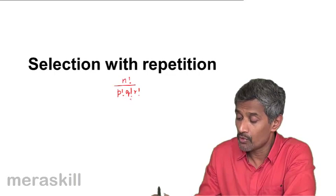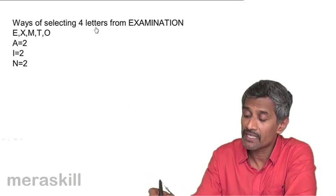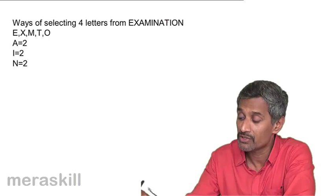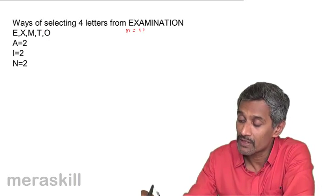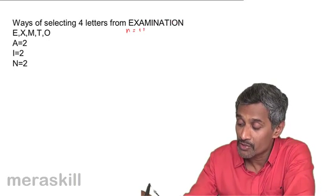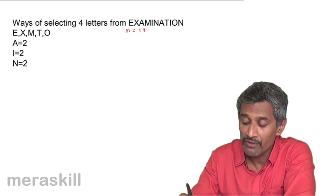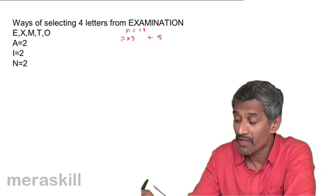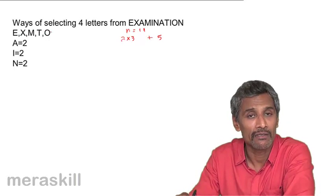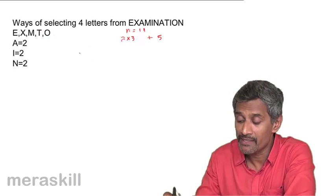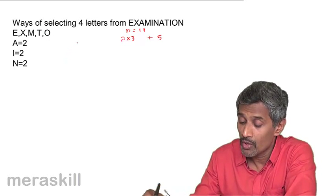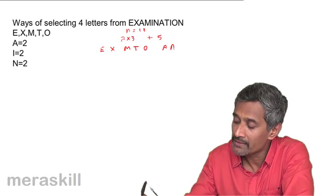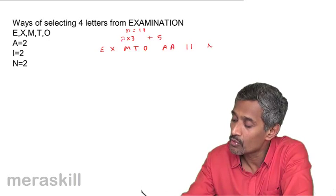We want to find the ways of selecting 4 letters from the word EXAMINATION. EXAMINATION has 11 letters, out of which three letters appear in pairs: there are 2 A's, 2 I's, and 2 N's. The remaining 5 letters — E, X, M, T, O — are all individual (single) letters.